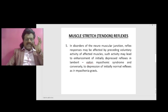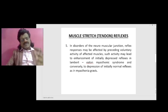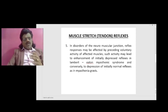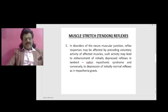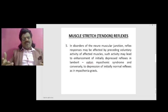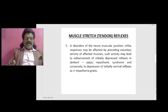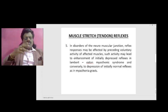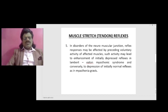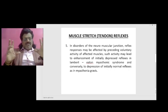Very interesting is the neuromuscular junction disease. It could be a post-synaptic disorder like myasthenia gravis, or a pre-synaptic disorder like Lambert-Eaton myasthenic syndrome. The manifestation of these reflexes varies between the two. In disorders of the neuromuscular junction, reflex responses may be affected by the preceding voluntary activity of the affected muscles.